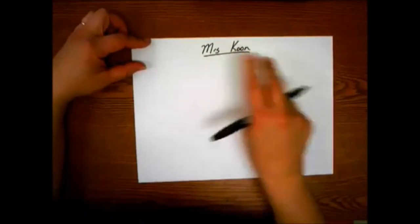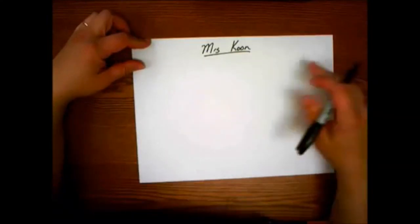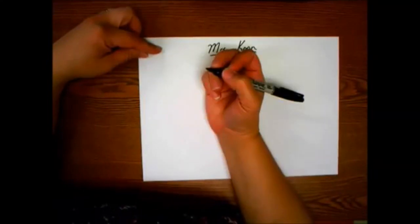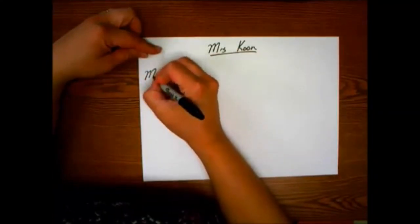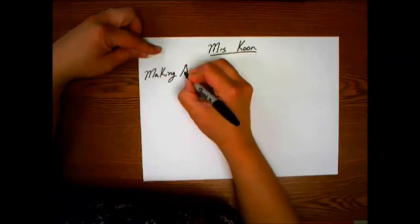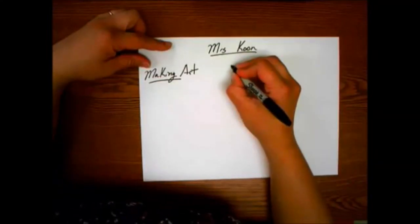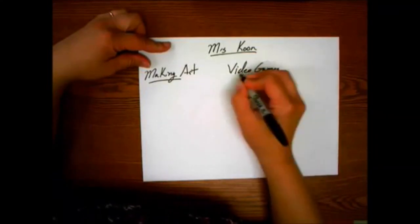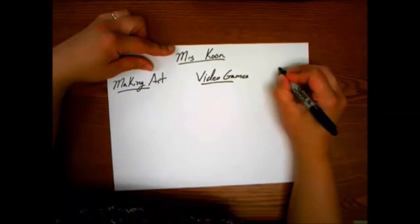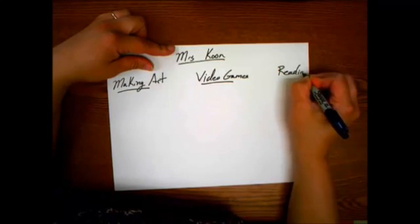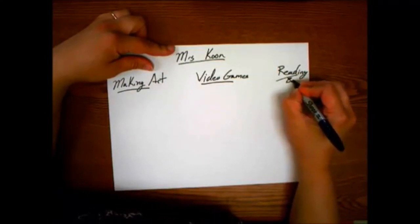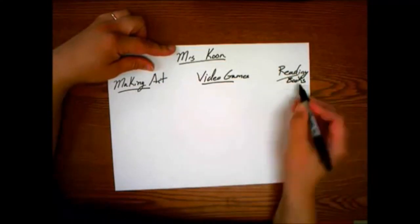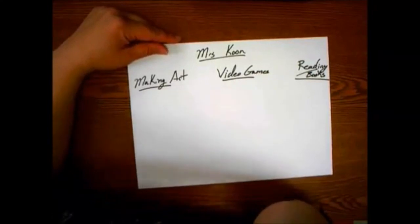Then you need to brainstorm, and you're going to do three different columns, and each one of those columns you're going to put a header, and the header is going to be the thing that you find most interesting. So for me, it's going to be making art, and then I really like to play video games, great way to relax, and reading, reading slash books. Alright, so there's my three categories.